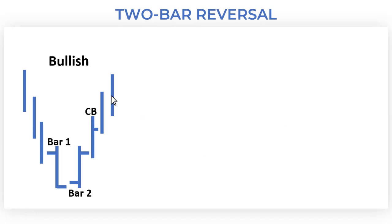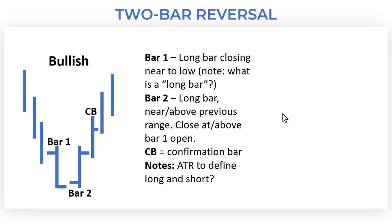This is the bullish pattern that we can see here. With this, we've got a 2 Bar pattern with a confirmation candle. In our ABC structure, we need a long bar closing towards its low. Just bear in mind we've got to define what we mean by a long bar in terms of our training plan — for example, how many ATR to define long bars and short bars.